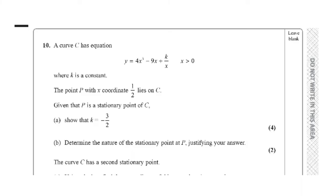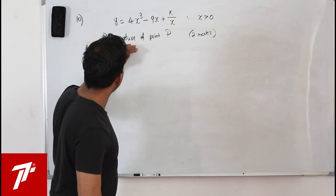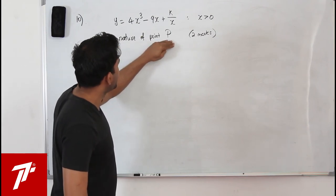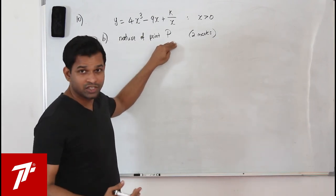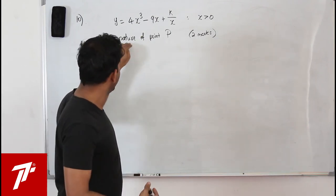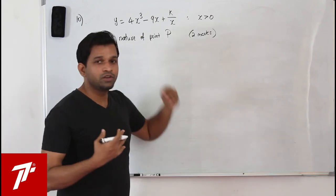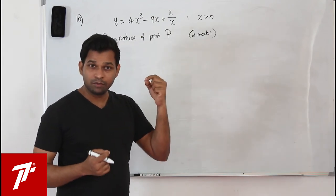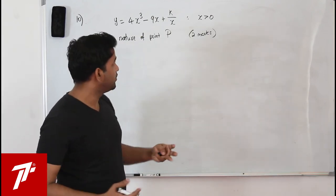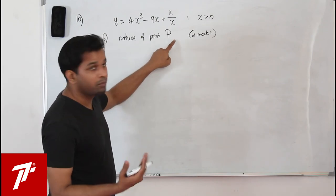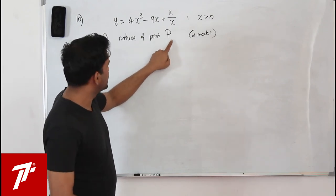Part B: determine the nature of the stationary point P, justify your answer. This has two marks. We find the second derivative and substitute the x-coordinate of P (which is 1/2). Check whether the second derivative is positive or negative.